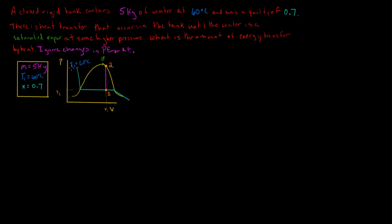Because this is a closed rigid tank, no mass is added and the volume doesn't change, so the process goes straight up to a higher pressure. State 2 is directly above State 1 on the PV diagram, with V1 equal to V2. The pressure increases, and State 2 is a saturated vapor at that higher pressure P2.